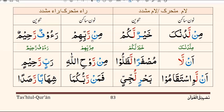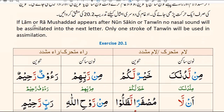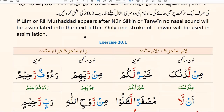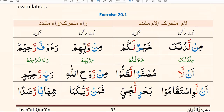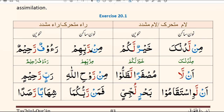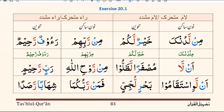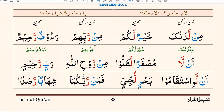Looking at the next example with a tanween: there is a laam mushaddad after it, so you forget one of the strokes — you are only left with one dhamma — and join the raw with the laam mushaddad, putting pressure on the laam. Then for the next example, there is a meem with a jazam and a noon with a jazam, but the letter after is a raa mushaddad. The student confirms: if raa mushaddad appears after a noon sakin, we fully ignore the noon.